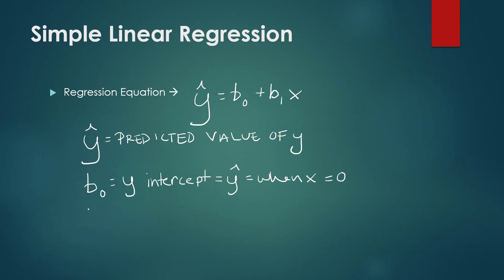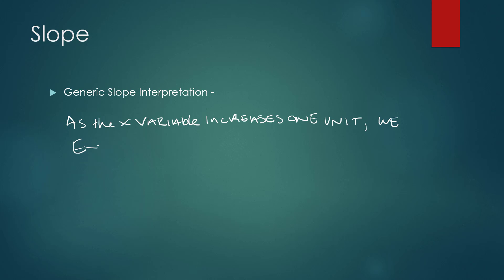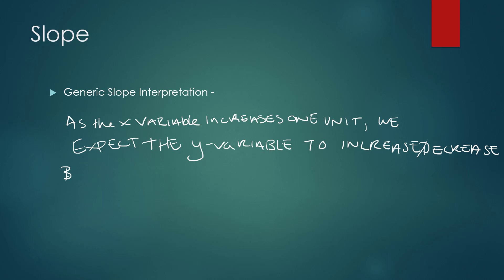B sub one is what we call the slope, and this can be thought of as how much y-hat will change for a one-unit increase in x. Generically, to interpret the slope we would say: as the x variable increases one unit, we expect the y variable to either increase or decrease — depending on the sign of slope — by whatever the value of slope is, including its units.